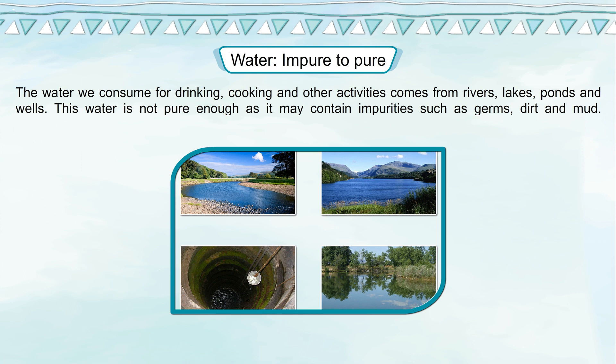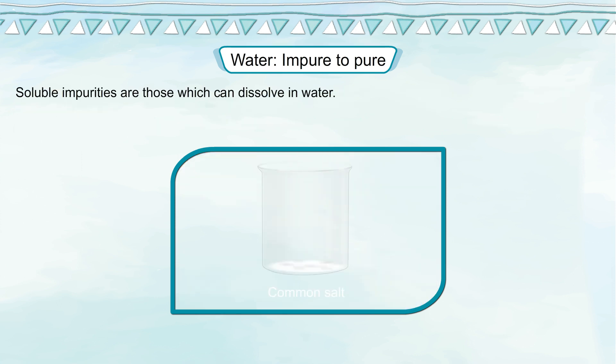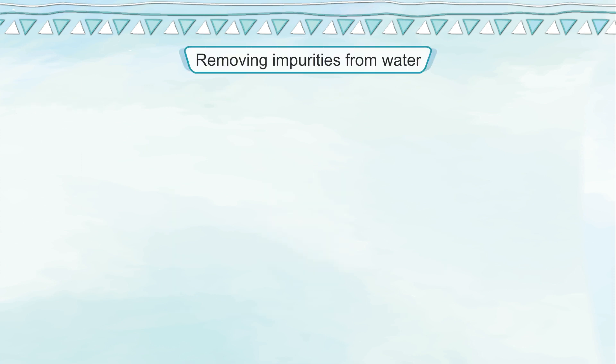This water is not pure enough as it may contain impurities such as germs, dirt and mud. Generally, impurities in water are of two kinds: soluble impurities and insoluble impurities. Soluble impurities are those which can dissolve in water — for example, common salt. Insoluble impurities are those which cannot dissolve in water — for example, sand.